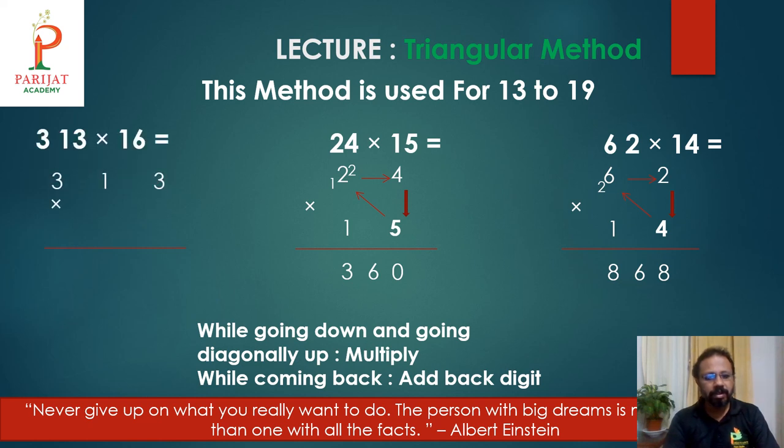Then here, 3 times 16. 6 times 16. 6, 3's are 18. Carry over 1. 6, 1's are 6 plus 1. 7 plus 3 is 10. Carry over again 1. 6, 3's are 18. 18 plus 1. 19 plus 1 is 20. Carry over 2. 2 plus 3 is 5.